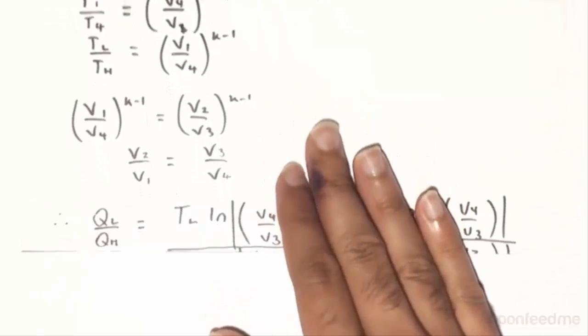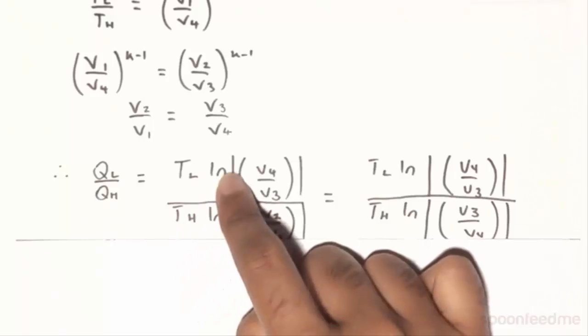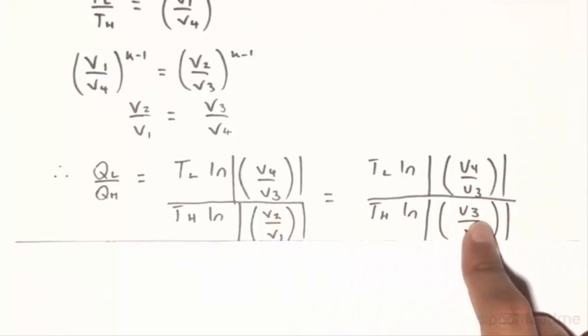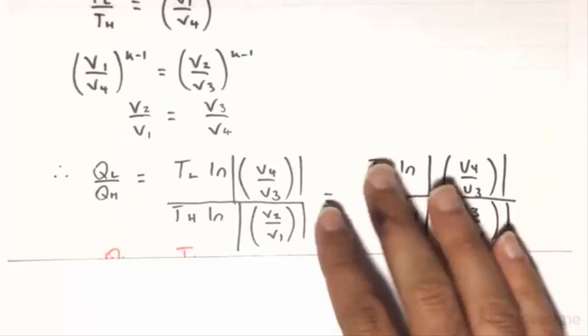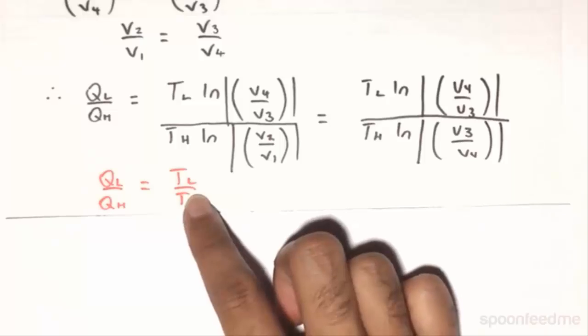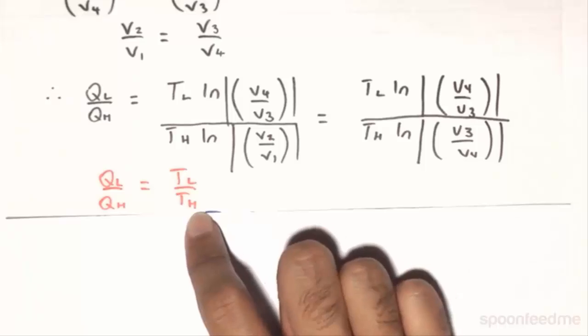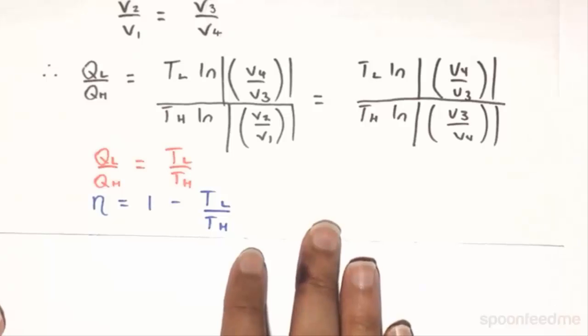So going back to our original expression of QL on QH is equal to TL on TH, the natural log of V4 on V3, and natural log of V2 on V1. Replacing the V2 on V1 with V3 on V4, and from our logarithmic knowledge, we will find that these two expressions will be the same, so the natural logs will cancel out. And therefore, finally, we will find it to be QL on QH is equal to TL on TH. So therefore, the thermal efficiency will just be 1 minus TL on TH for the Carnot cycle.